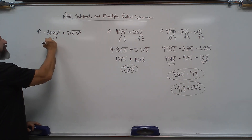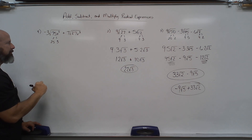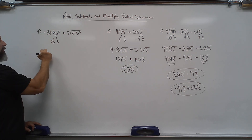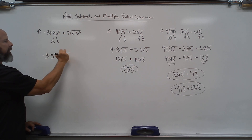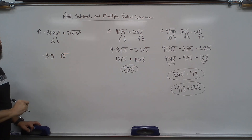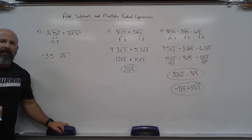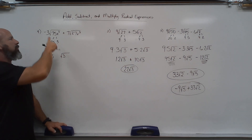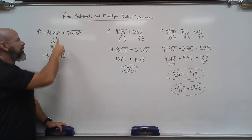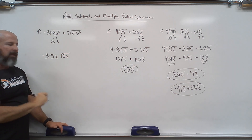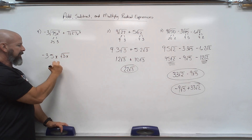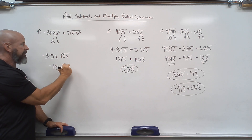Looking at the first term: 75 is 25 times 3, so I've got my negative 3 out front, root 25 is 5, there's still a 3 inside, and then for x cubed under a square root, 2 goes into 3 one time, so one x comes out and one stays in.